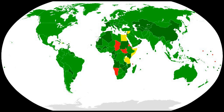Subsequent review conferences have reaffirmed that the general purpose criterion encompasses all future scientific and technological developments relevant to the Convention. It is not the objects themselves — biological agents or toxins — but rather certain purposes for which they may be employed which are prohibited, similar to Article 2.1 in the Chemical Weapons Convention. Permitted purposes under the BWC are defined as prophylactic, protective, and other peaceful purposes.